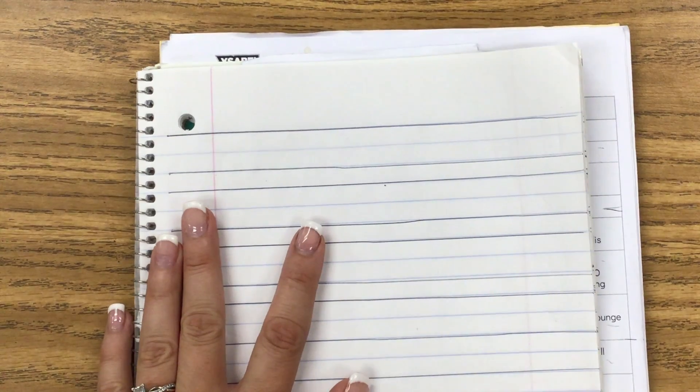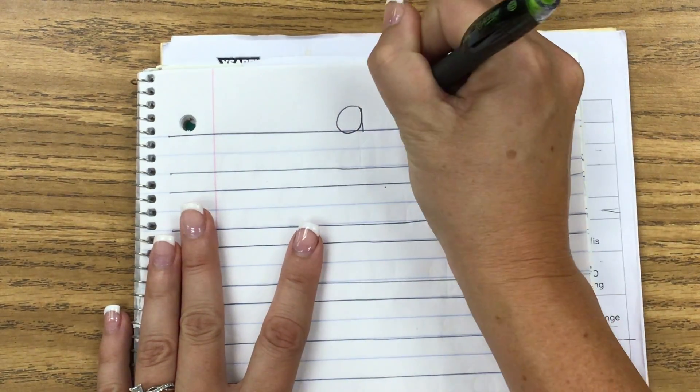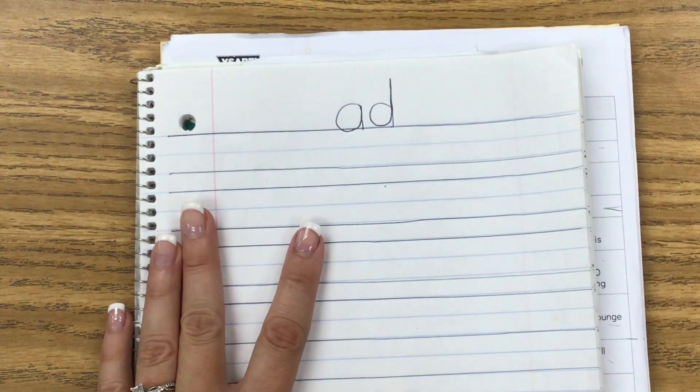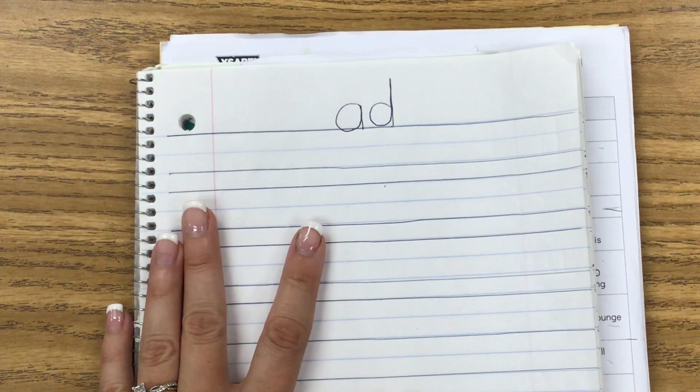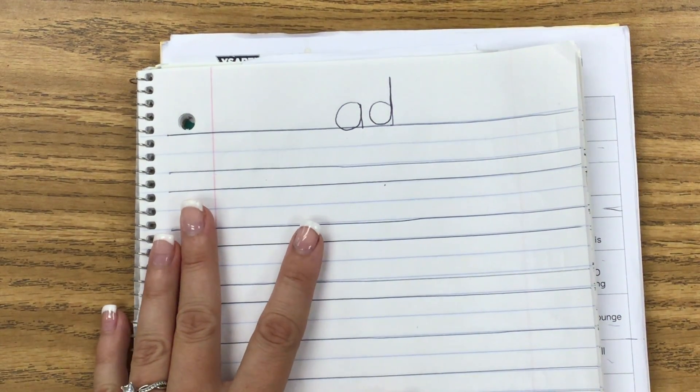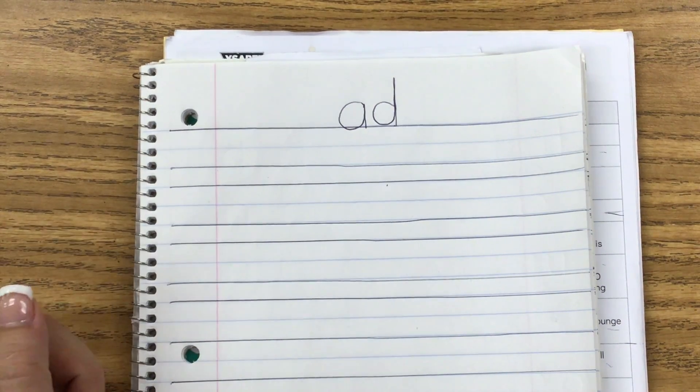We are going to be practicing this morning A-D words. So I'm going to put up at the top A-D-AD. So we are going to be changing just the beginning sound to make A-D words. We know A-D says AD.